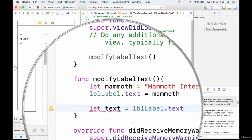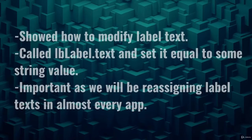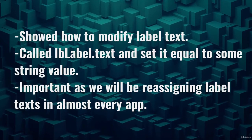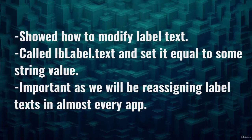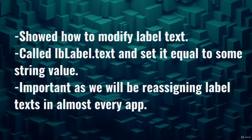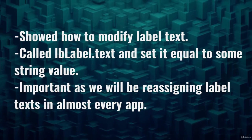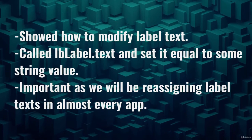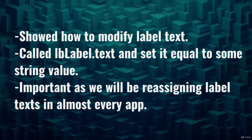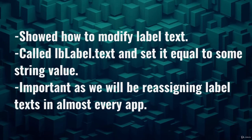We'll get more into what to do with this in the next part - just know that you can pull the current text from a label. In this tutorial we showed how to modify label text by calling lbl_label.text and assigning it a string value. You can pass in a string directly, a string variable, or something converted to a string. Label text must always be a string. It's an important skill since most apps require some reassigning of label text - just remember: label name dot text, assign it a string.